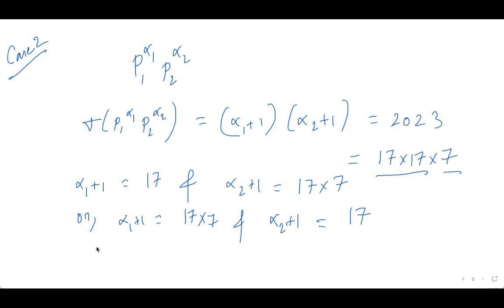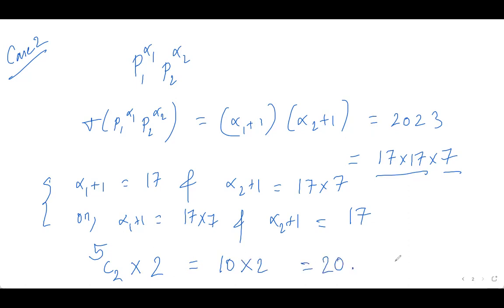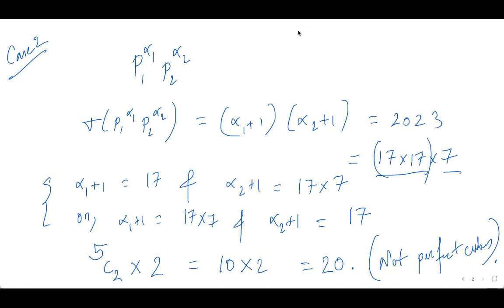So from Case 2, the total number of non-perfect-cube numbers is: choose 2 prime factors from 5, which is 5C2 = 10, multiplied by 2 valid arrangements each time, giving 10 × 2 = 20 non-perfect-cube numbers. Any other split in Case 2 produces perfect cubes, so I can't get more than 20 non-perfect-cubes here.